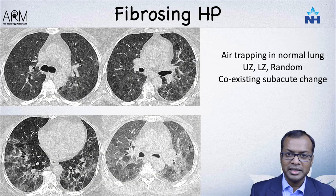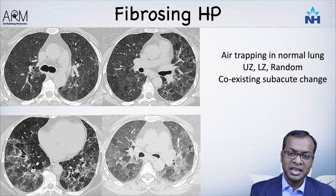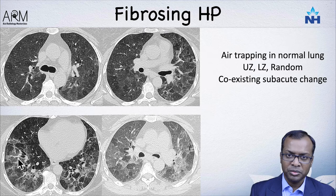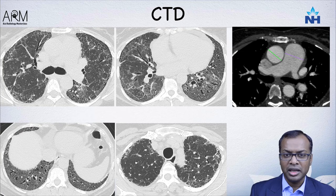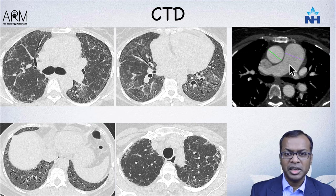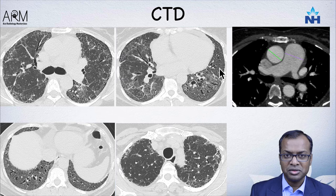With new guidelines on hypersensitivity pneumonitis, we now use the terminology fibrosing hypersensitivity pneumonitis versus non-fibrosing hypersensitivity pneumonitis. Central involvement, reticular changes, and air trapping suggest hypersensitivity pneumonitis — and if you start seeing architectural distortion, think about fibrosing hypersensitivity pneumonitis. Also, always look at the pulmonary artery — a dilated pulmonary artery relative to the aorta suggests pulmonary hypertension, which could be secondary to pulmonary fibrosis or part of connective tissue disease, especially if you also see a dilated esophagus or extensive ground glass opacities.